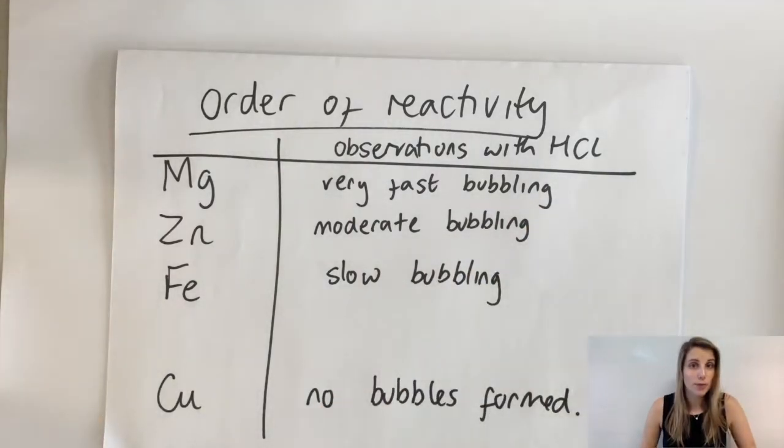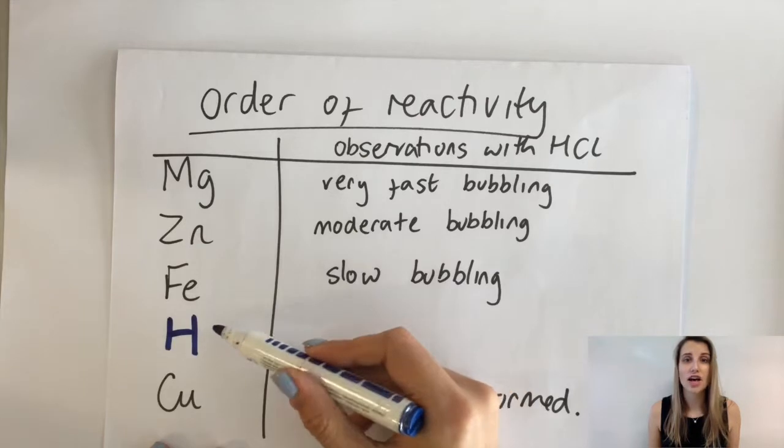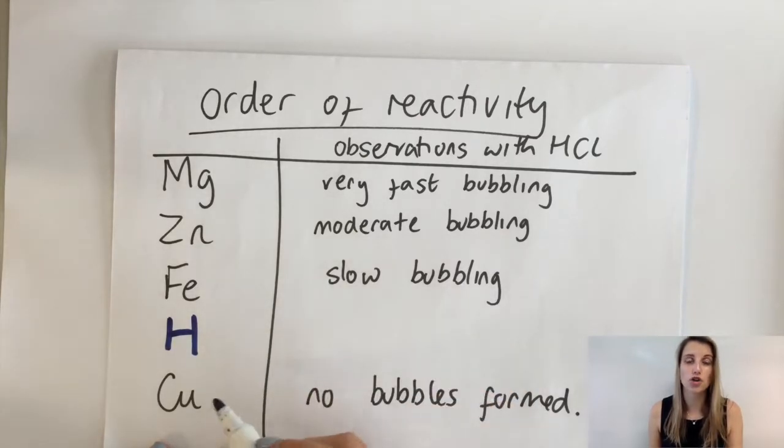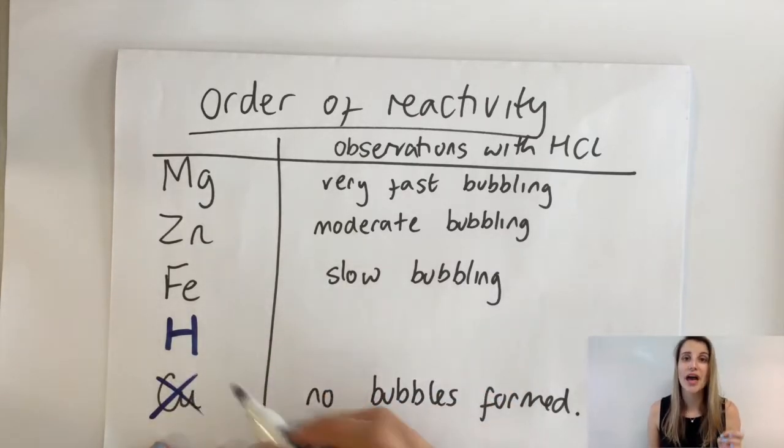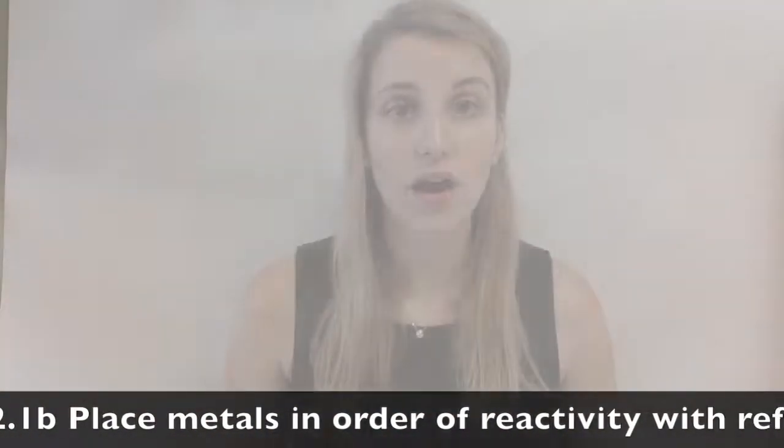Copper has no bubbles. It doesn't react with hydrochloric acid at all. And in fact, it reacts with no acids. That's because it's below hydrogen on your reactivity series. So anything below hydrogen on your reactivity series will not react with acids.